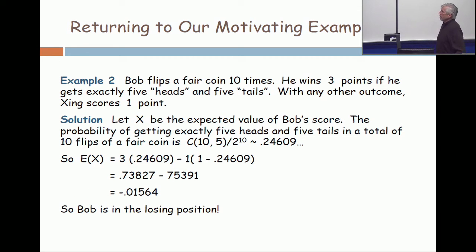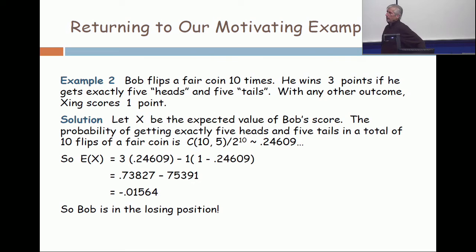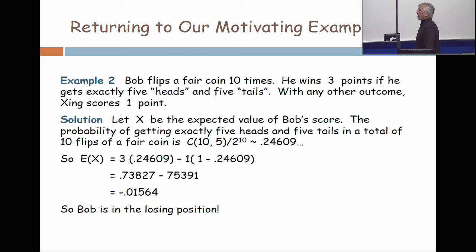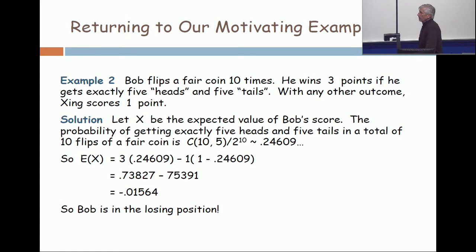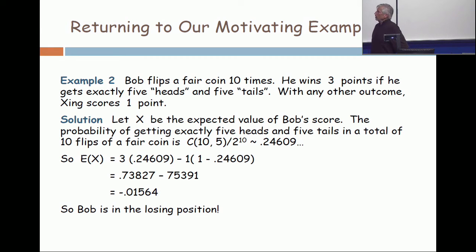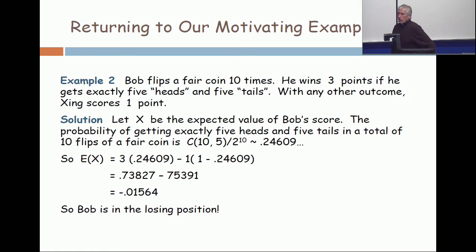Another example: Bob flips a fair coin ten times. He wins three points if he gets exactly five heads and five tails; with any other outcome, Shing scores one point. What's the expectation of Bob's score? We calculated before that the probability of getting five heads in ten tosses is about 0.24609. So the expectation for Bob's score is three times 0.24609, minus one times the complement probability. Bob loses a little more than a penny on a dollar bet every time this game is played.